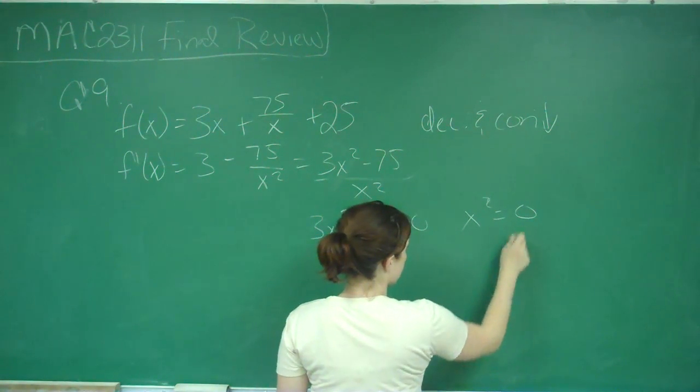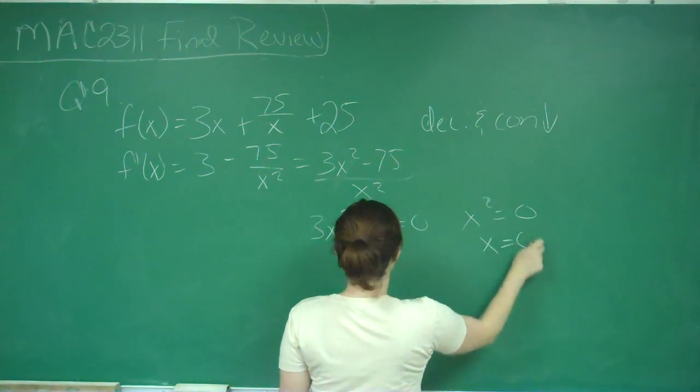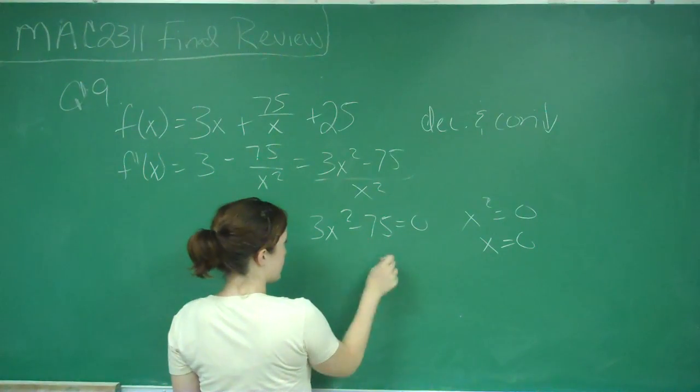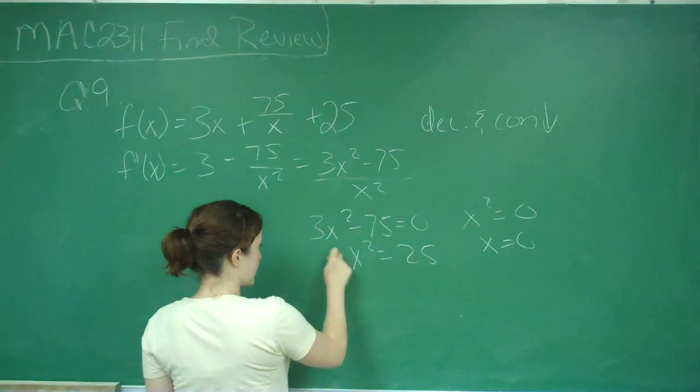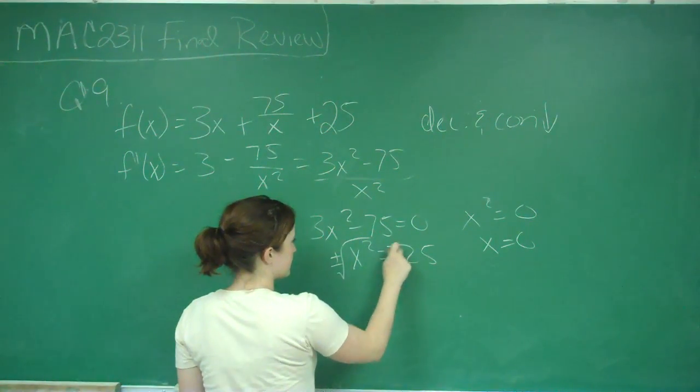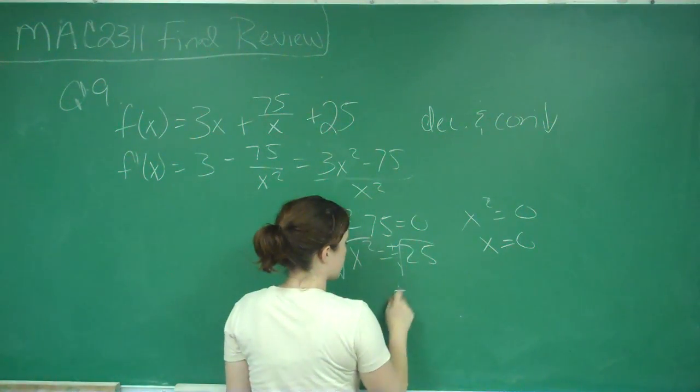So one of our critical numbers we know is 0. And here we add 75 divided by 3, and we get x squared is equal to 25. Take plus or minus the square root of both sides, and we get plus or minus 5.